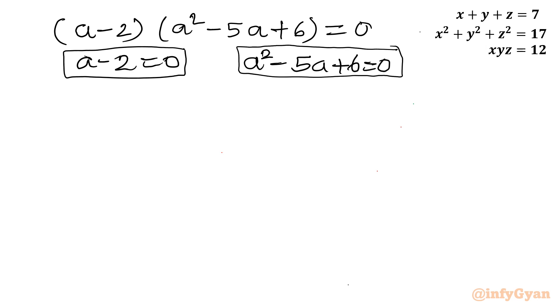Once a minus 2 is 0, that means a is equal to 2. So I will write a is equal to 2. And for this quadratic equation I will split this minus 5a into minus 2a minus 3a plus 6 equal to 0.